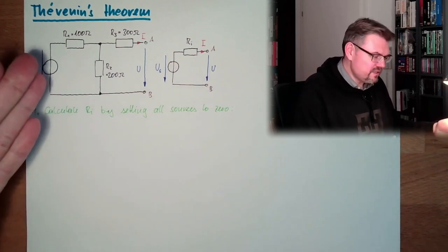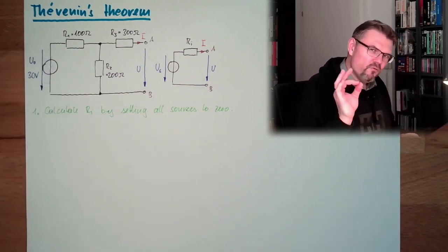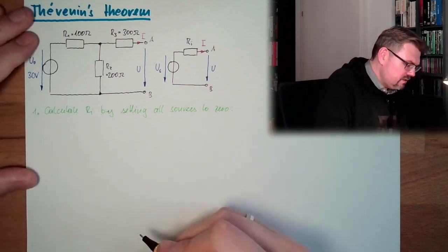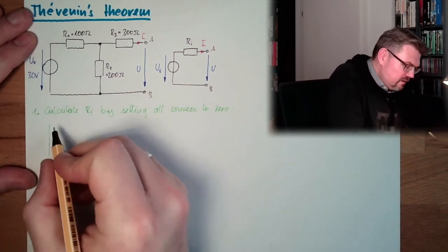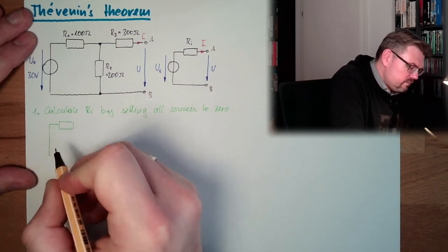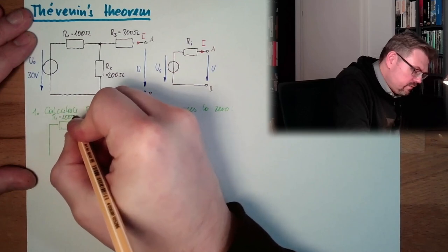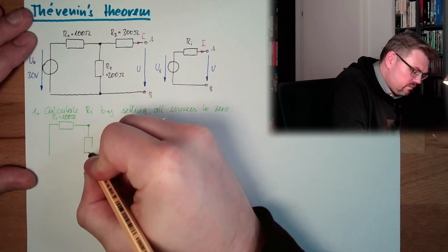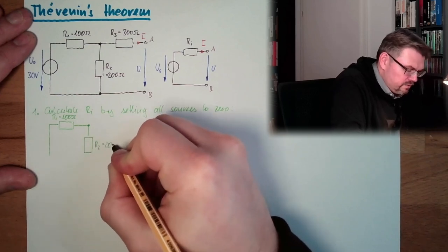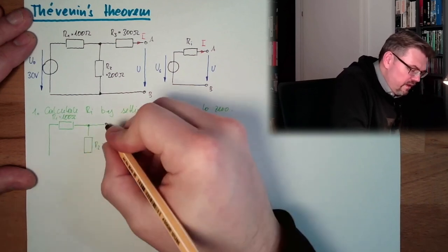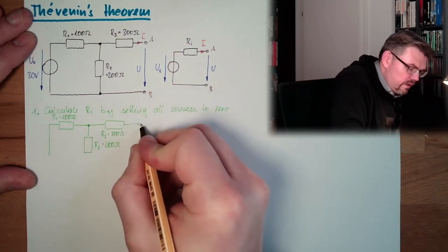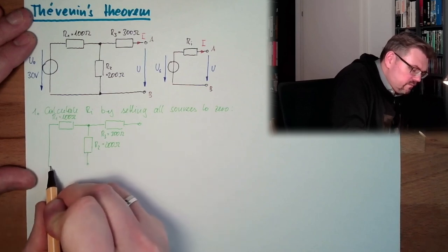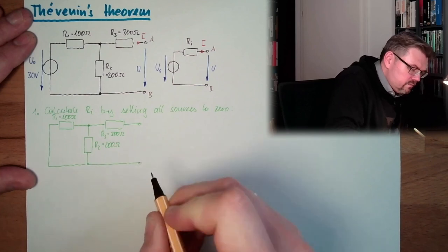We set this source to zero. A voltage source with zero volts is just a connection. So we have here R1 = 100 ohms, R2 = 200 ohms, R3 = 300 ohms, and the connections A and B.